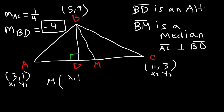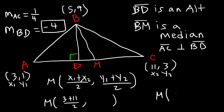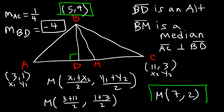We use the midpoint formula: x1 plus x2 divided by 2, and y1 plus y2 divided by 2. The x-coordinate of the midpoint is the average of 3 and 11. 3 plus 11 is 14, divided by 2 is 7. The y-coordinate is the midpoint of 1 and 3: 1 plus 3 is 4, divided by 2 is 2. So M is at (7, 2). Now all we need to do is calculate the slope between points B and M.